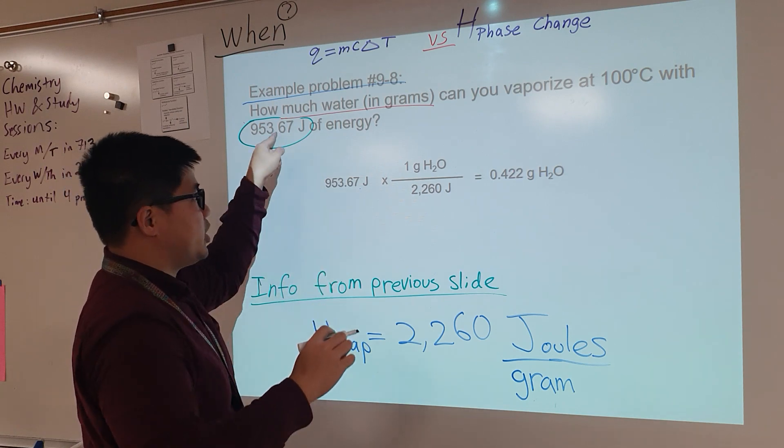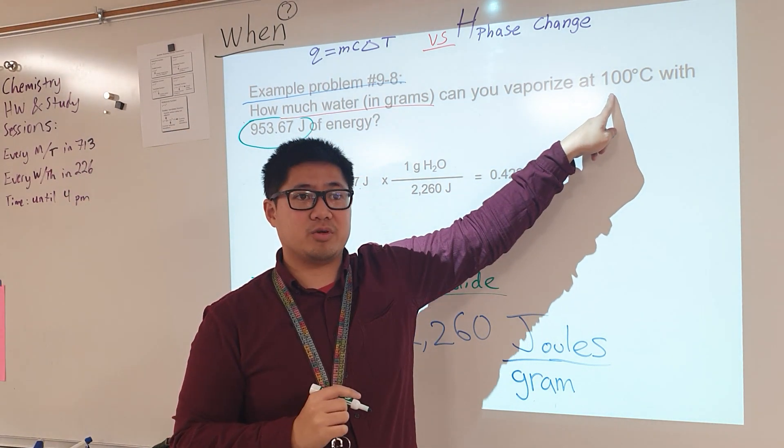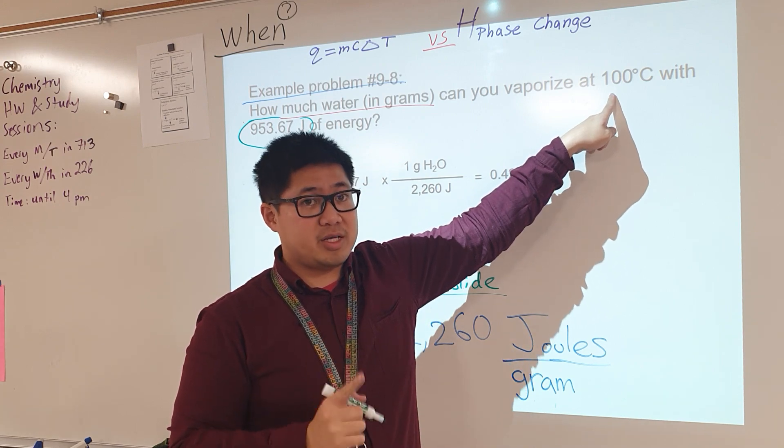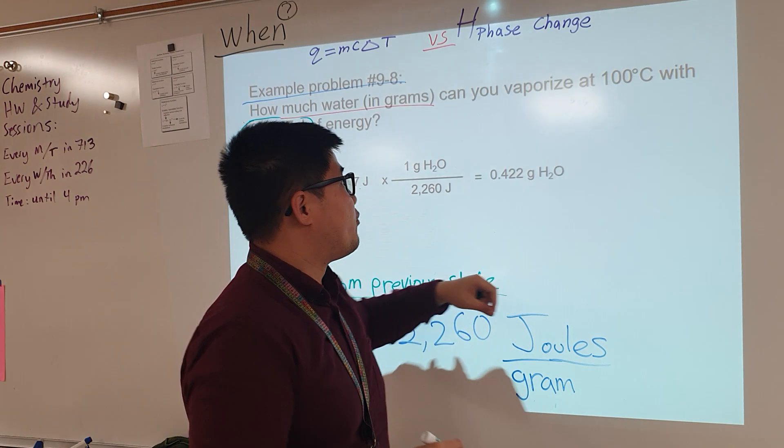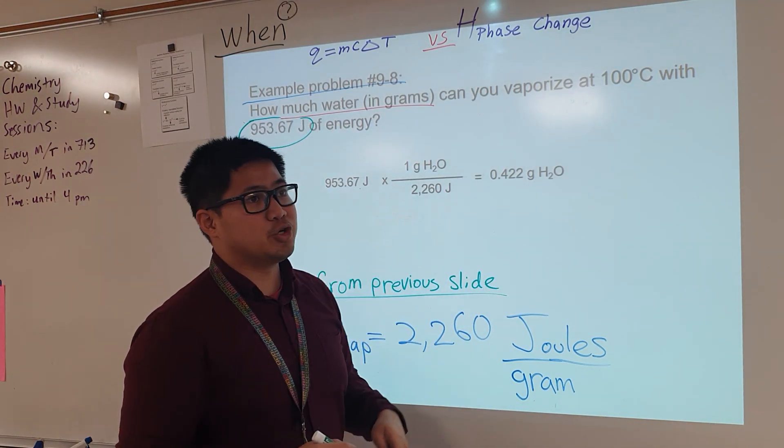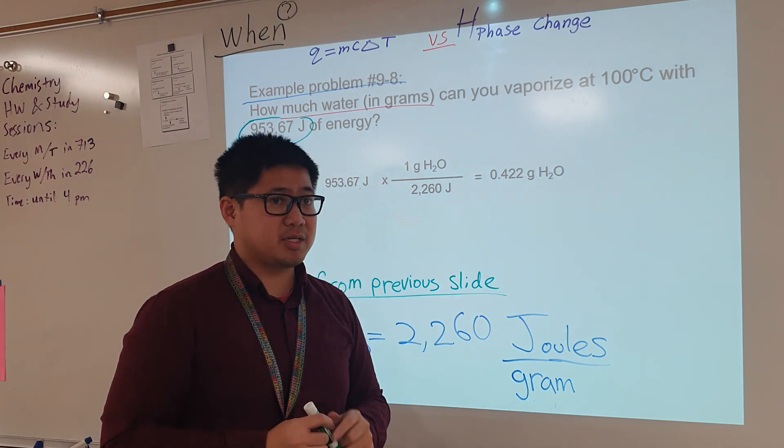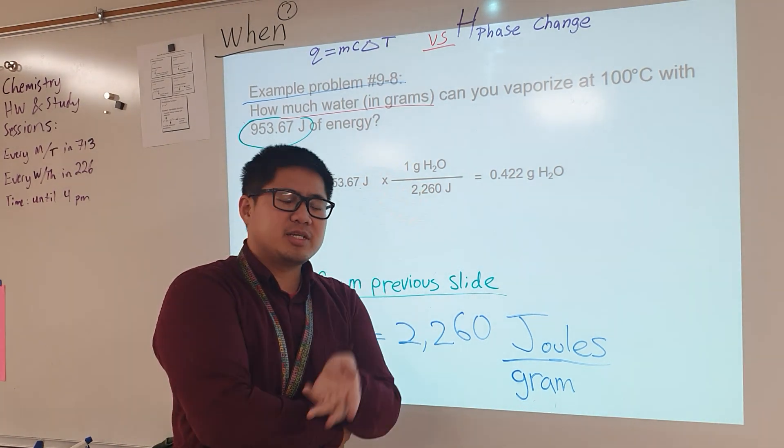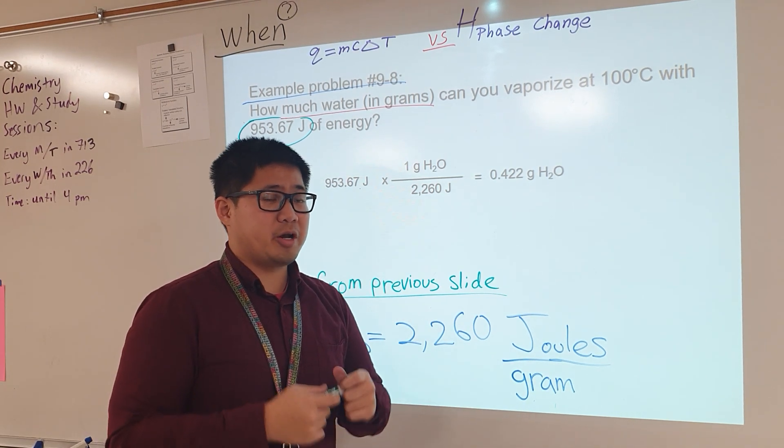And I circled this one, and I choose not to circle this one because I want to talk about this one really quick. This is 100 degrees Celsius. This is the temperature that it takes for liquid water to transition into water vapor. And the reason why that's important is because if we are transitioning from one state of matter to the other, would there be any change in temperature at all?